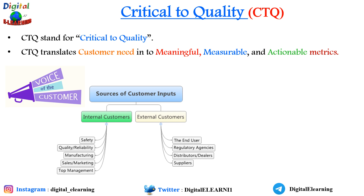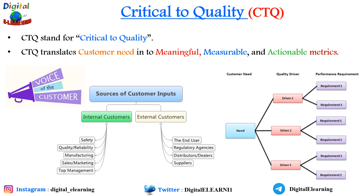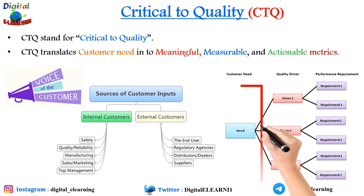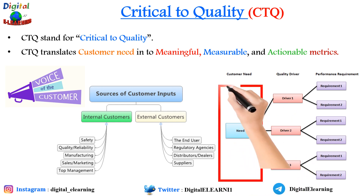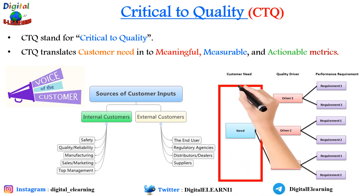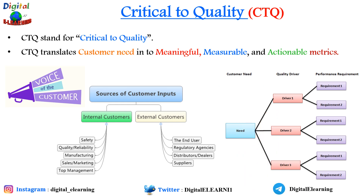Let us see the CTQ tree and how it helps us convert customer needs into performance requirements. The first section is the customer need, which talks about the 'what.' Every customer has needs that can be expressed in measurable terms as Critical to Quality. We must recognize that not all CTQs are of equal importance.